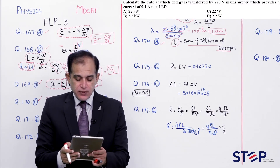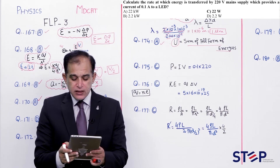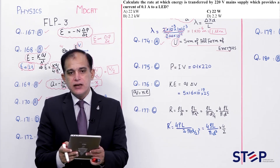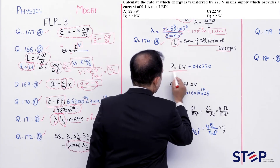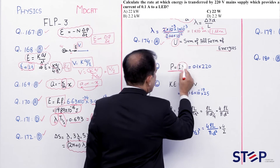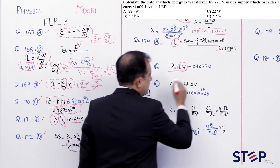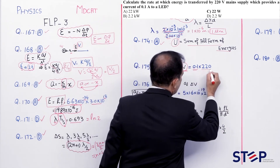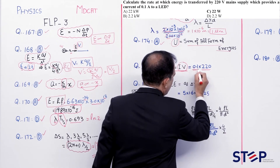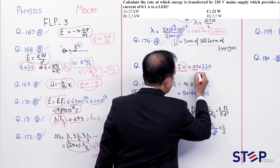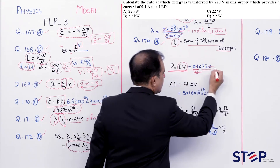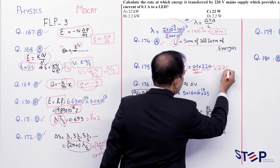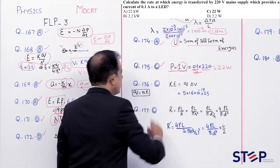Question number 175: Rate at which energy is transferred by 220V supply providing 0.1 A to LED. P = IV = 0.1 × 220 = 22 W. Correct option: Charlie.